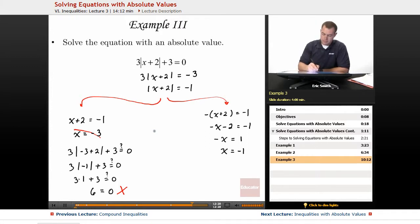Alright, let's try it on the other side. We'll put in negative 1. Okay, so I have 3. Negative 1 plus 2 is a positive 1. And the absolute value of positive 1 is 1.